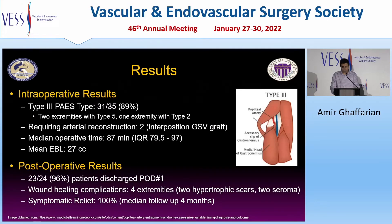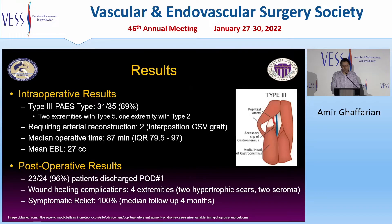Intraoperatively, we discovered type III popliteal entrapment in 31 out of the 35 extremities, which is defined as an accessory muscle slip or fibrous bands that encase the artery. Two extremities had type V, and one extremity had type II. Two extremities required arterial reconstruction with interposition great saphenous vein graft.